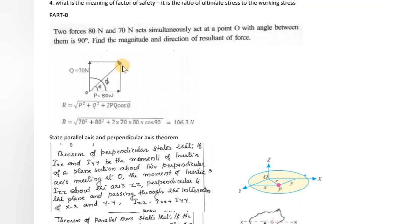Using the parallelogram law of forces, the resultant magnitude is given by: R = √(P² + Q² + 2PQ·cosθ). Since θ = 90°, cos90° = 0, the equation reduces to R = √(P² + Q²) = √(70² + 80²) = 106.3 N.